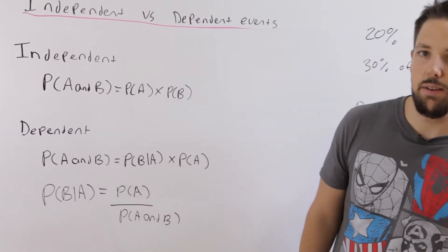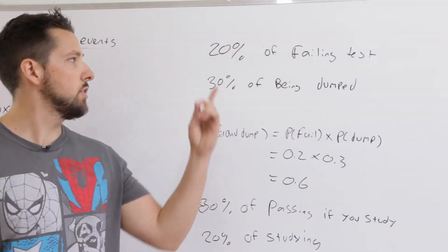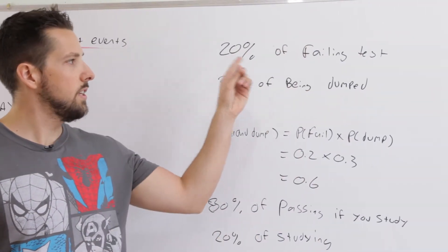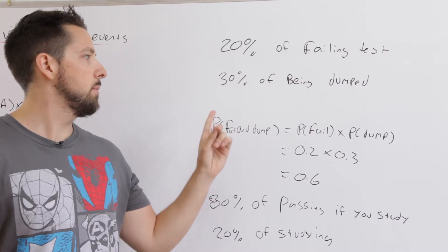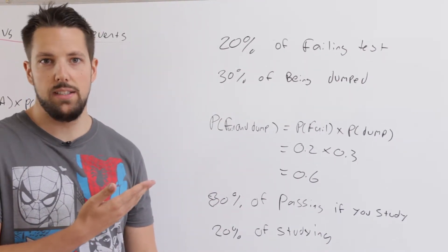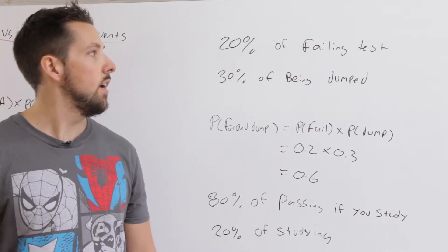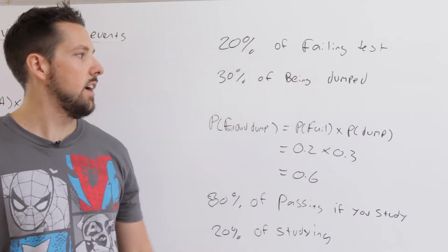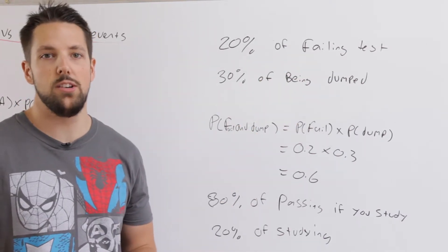We're going to do a couple of examples to help this make more sense. In the first one, you have a 20% chance of failing a test and a 30% chance of being dumped by your girlfriend. Are these two events dependent or independent? Well, does failing the test affect being dumped? No. So these two events are independent.